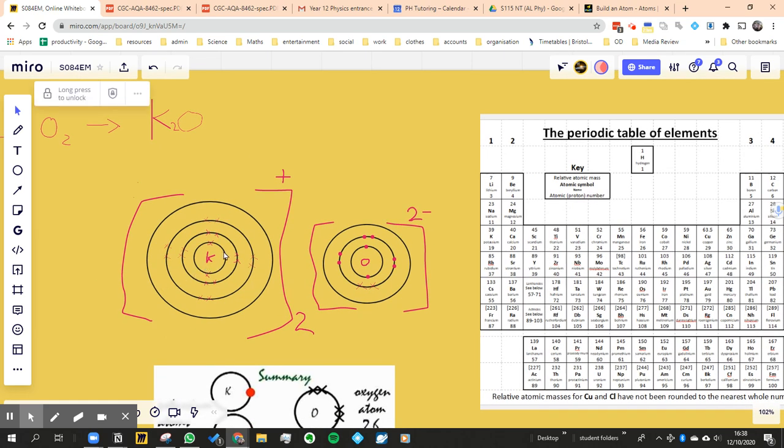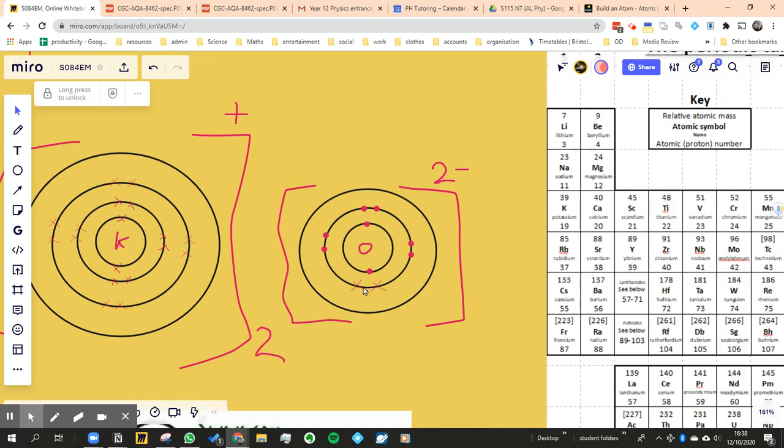This can be shown in this dot and cross diagram. The potassium has lost one of its electrons from the outer shell and gone over to this oxygen one to help fill it.